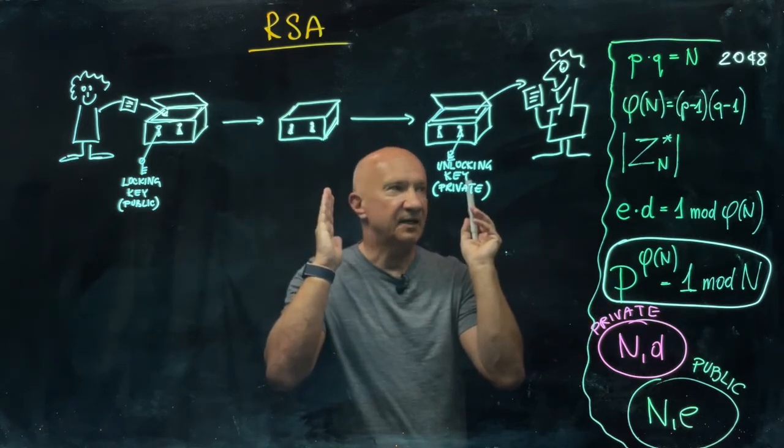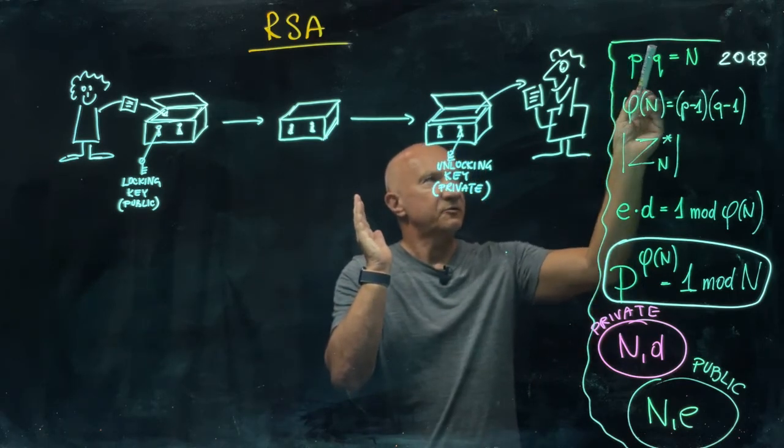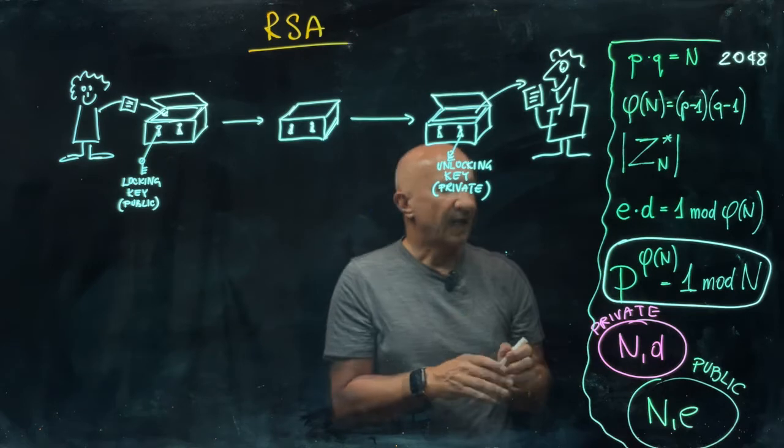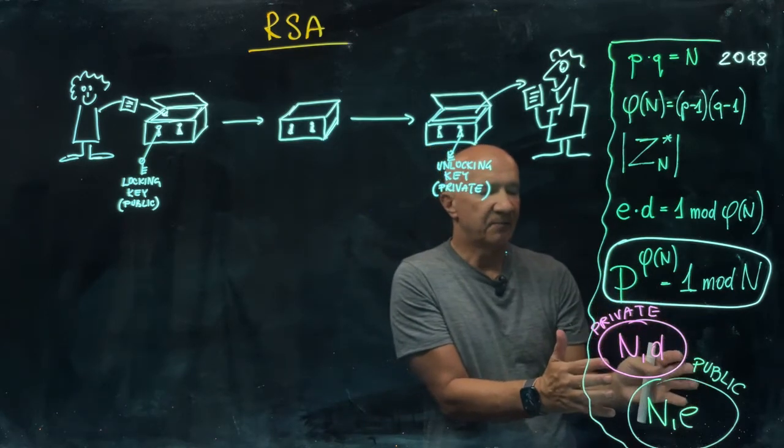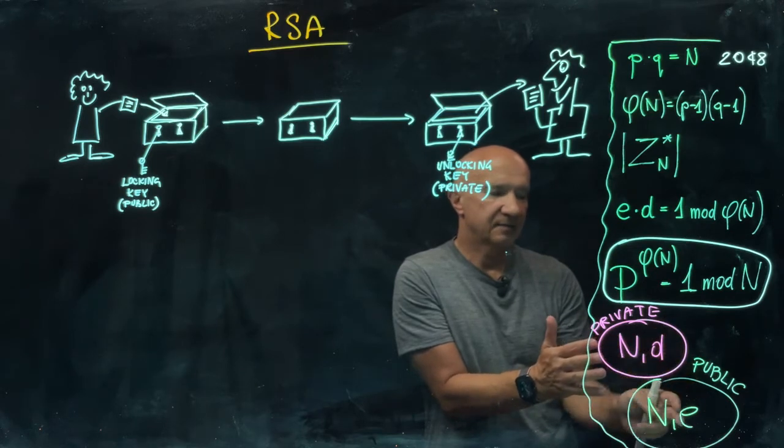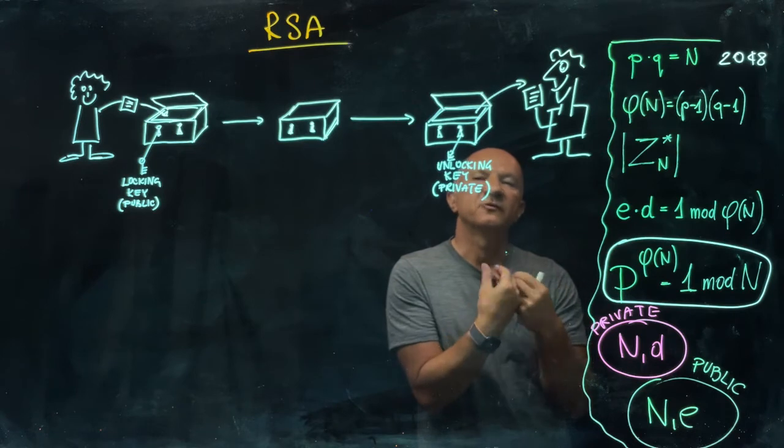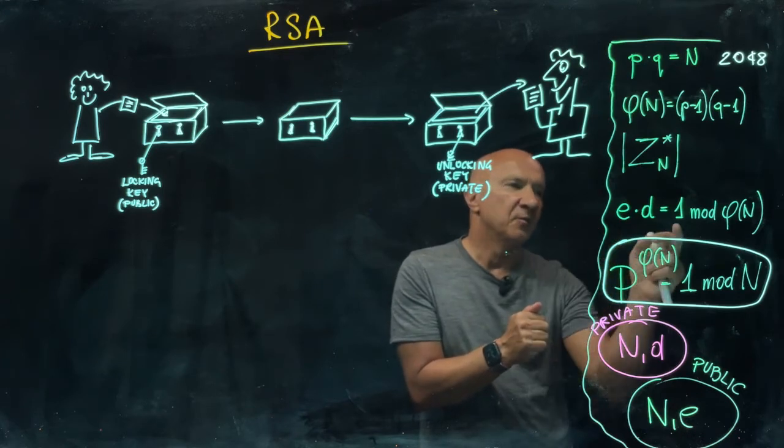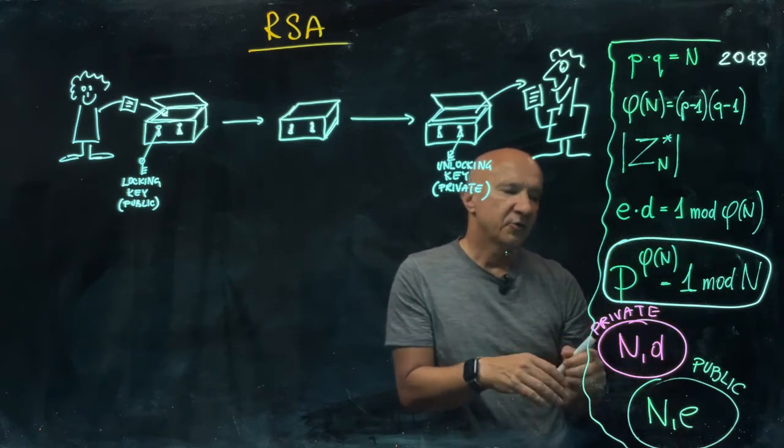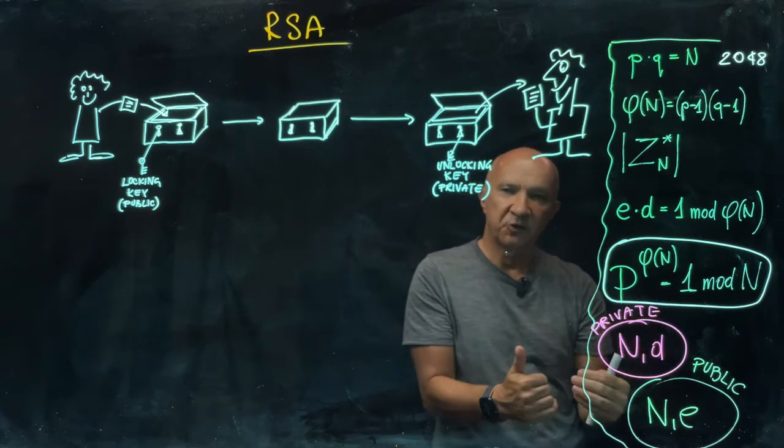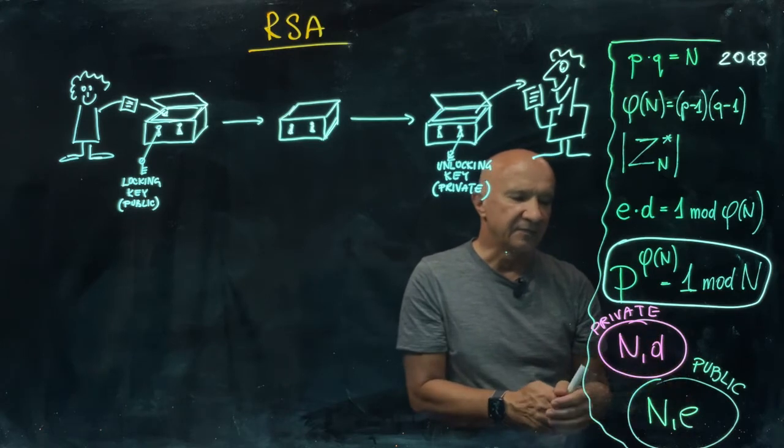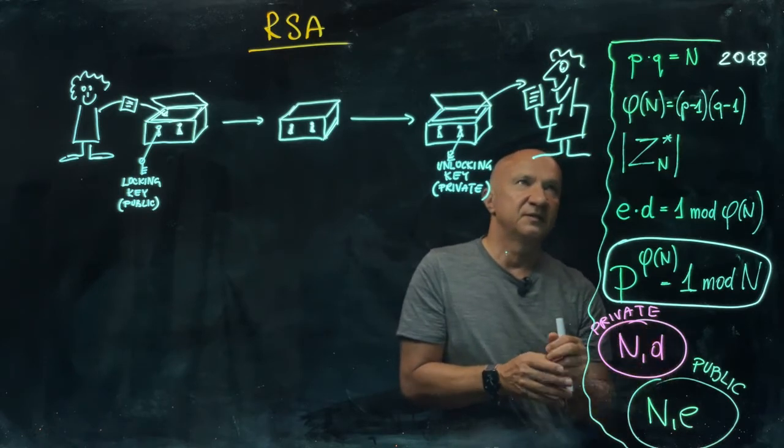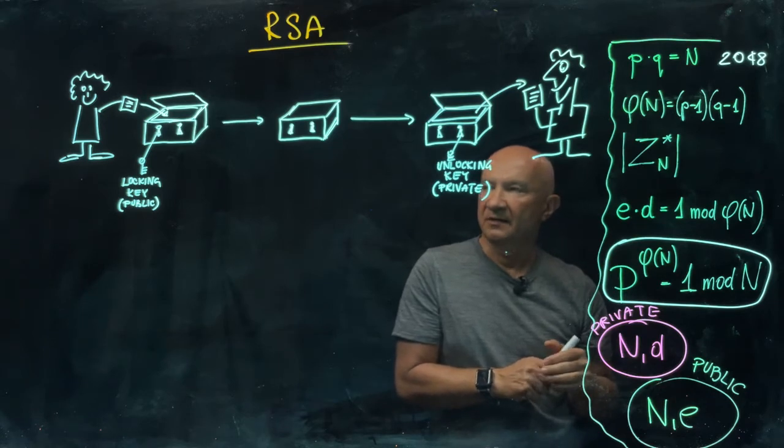So now, Bob then has the following. He knows p, he knows q, he knows number n, he knows phi of n, and he constructed those two numbers e and d, and he's going to announce to everyone number n and e. What he's not going to reveal is this number d, which is the inverse of e mod phi of n. We can say that the pair n d forms the private key, and n e is the public key. Of course, n is known, and n is public. What is really secret here is d, and then, of course, there's the composition into p and q.